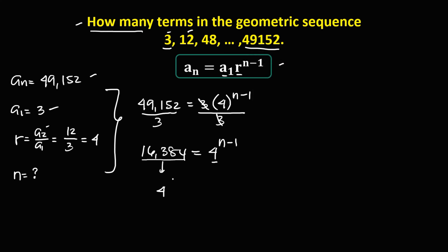So we have 4 to the power 7 equals 4 to the power n minus 1. Since we have the same base, we can equate these two exponents. So we have 7 equals n minus 1.